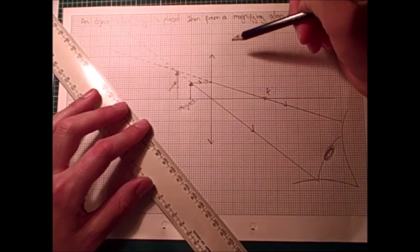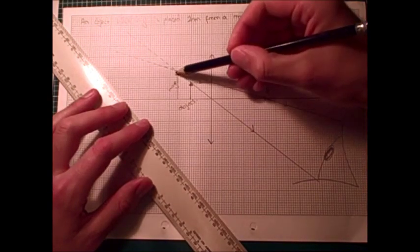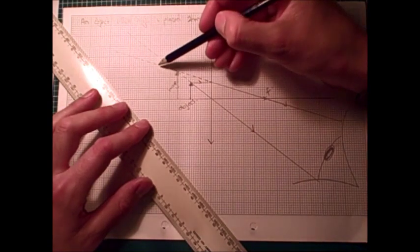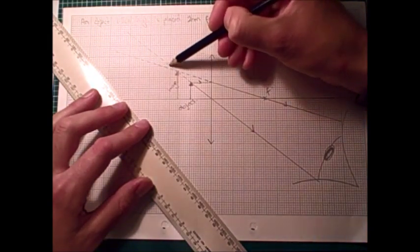It's enlarged, because it's bigger than the object. And we can also tell that it's virtual, because it was formed where virtual rays crossed.